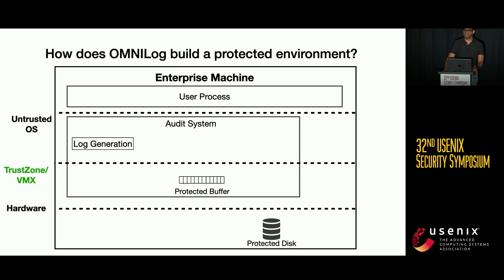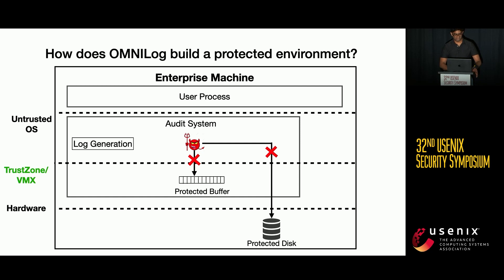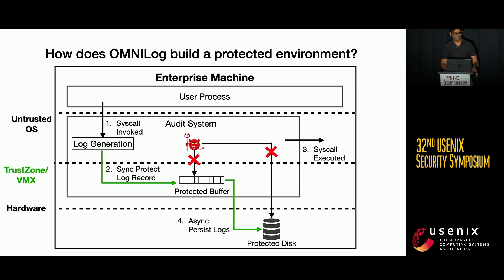OmniLog builds this protected environment using rich CPU features — for example, the architectural system management mode on ARM such as EL3, and the hypervisor enforcement layer like VMX on x86 — which can isolate memory regions and devices such as a disk from the untrusted OS, providing high privileges to manage log protection, persistence, and even power management to guarantee logs have persisted before a shutdown. To ensure low latency of log protection, once isolation is enforced on the memory region, a kernel-level attacker cannot access logs in the protected buffer, and similarly cannot tamper with logs on the protected disk. When a system call is invoked, logs are synchronously copied to the in-memory buffer in the protected environment, the system call is executed, and then behind the scenes these logs are asynchronously written to the protected disk.